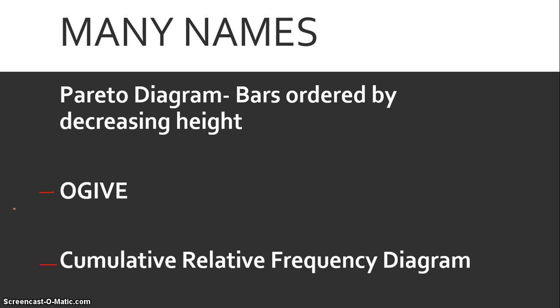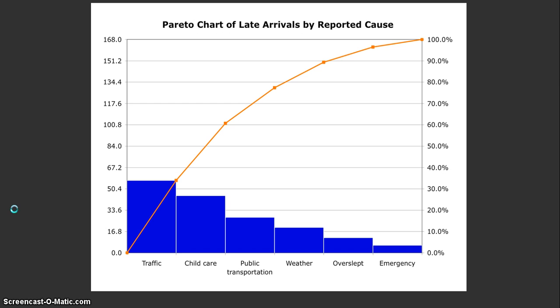So the most frequent event or category comes first, then the next most frequent, and the next most frequent. If that sounds confusing, I'm going to show you what that means. So this is a Pareto Diagram.